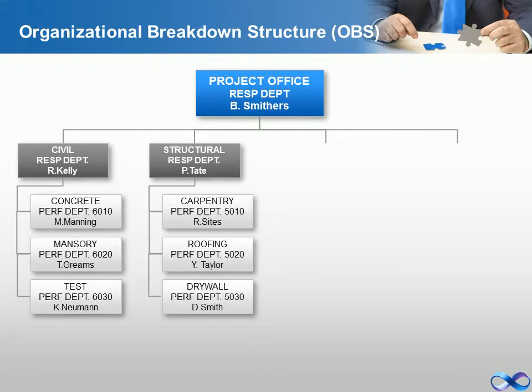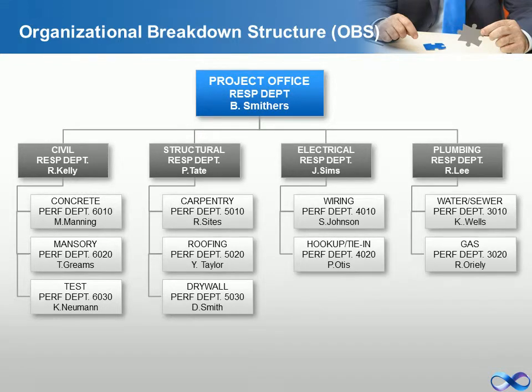Now that our work breakdown structure is developed, the appropriate resources and responsibilities need to be assigned. The first step in doing this is developing the organizational breakdown structure for the project. The organizational breakdown structure indicates the organizational relationships and is used as the framework for assigning work responsibilities. Below is an example of the organizational breakdown structure for the new house project. It is structured by responsible department and then by performing department at the lowest level, where the responsibility and resources needed to accomplish the project will be assigned.